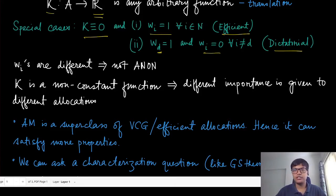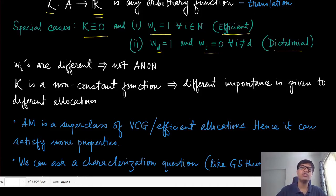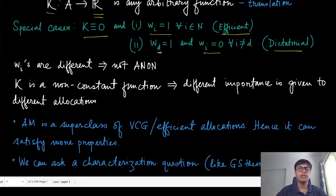Kappa could be a non-constant function of the allocation. The interpretation is that it gives different importance to different allocations — some allocations are given higher importance in the final social choice outcome and some are given lower importance.